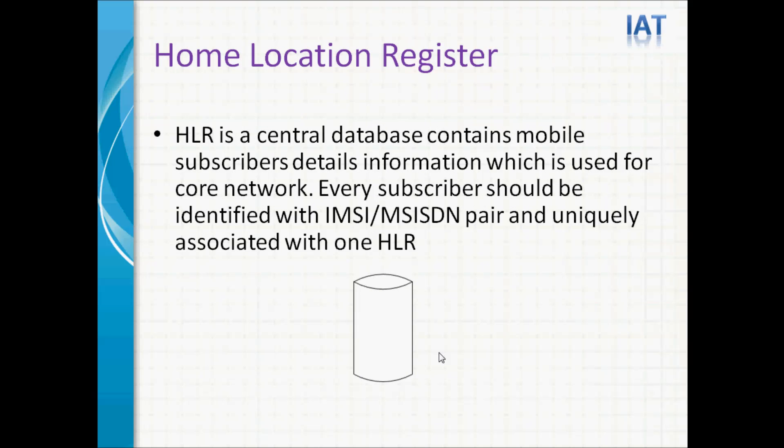Home Location Register — HLR is a central database that contains mobile subscriber's detailed information, which is used for the core network. Every subscriber should be identified with an IMSI and MSISDN pair, and is uniquely associated with one HLR. In a network, there can be more than one HLR. Based on the subscriber number prefix, HLRs can be separated.